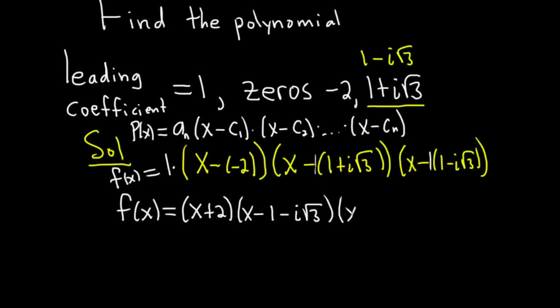And then here it will be x and then negative 1. Then negative and negative is positive, so plus i square root 3. Writing this again, we have f of x equals parentheses x plus 2. Now here is where it gets really interesting.